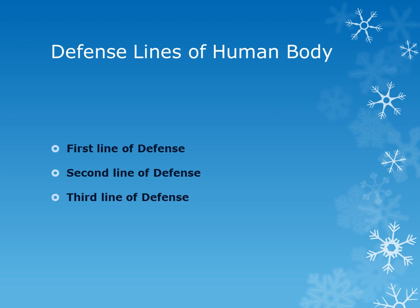If we talk about the defense lines of the human body, there are three important defense lines: first, second, and third. The first line of defense includes the intact skin surface and intact mucous membranes, which give protection against various microorganisms. If a microorganism successfully breaches the first line of defense, then comes the role of the second line.